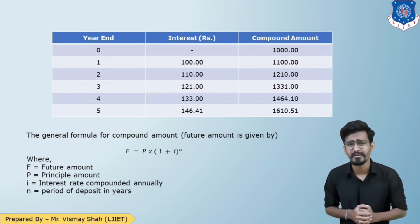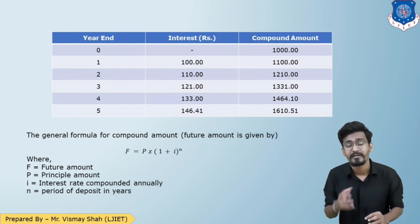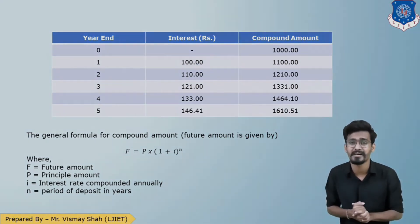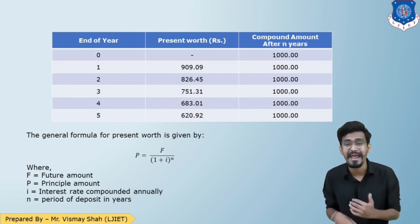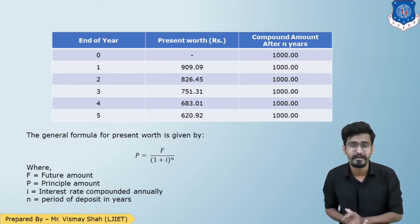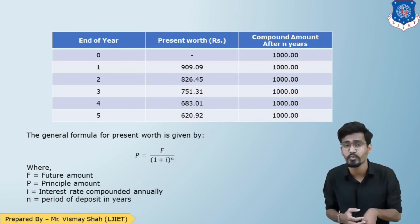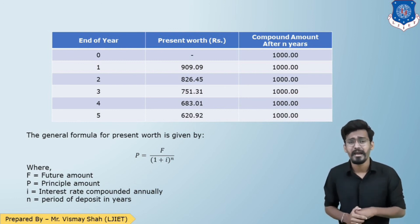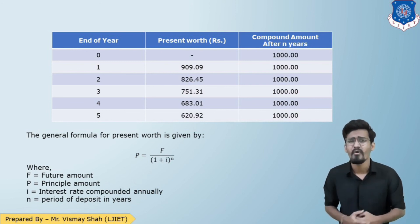Now the reverse scenario: what if I need 1,000 rupees at the end of the fifth year — what amount should I invest currently? In the previous case P was known and F was unknown; here F is known and P is unknown. The formula is reversed: P = F / (1 + i)^n. If you calculate, you need to invest approximately 620 rupees today in order to get 1,000 rupees in five years.